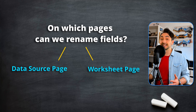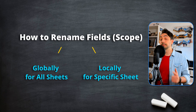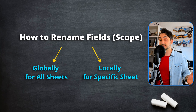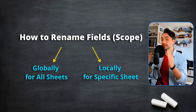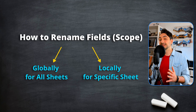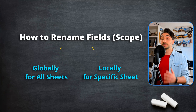The second question is: can we rename our fields globally for the whole workbook, for all worksheets, and can we also do it locally for only one view? You can do both, but renaming locally for only one view is a little bit tricky. Now let's learn how to rename our fields globally for the whole workbook, for all views, in the worksheet page.